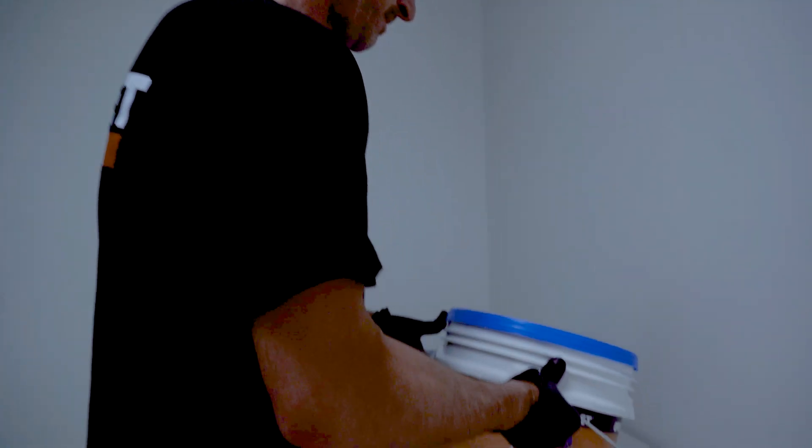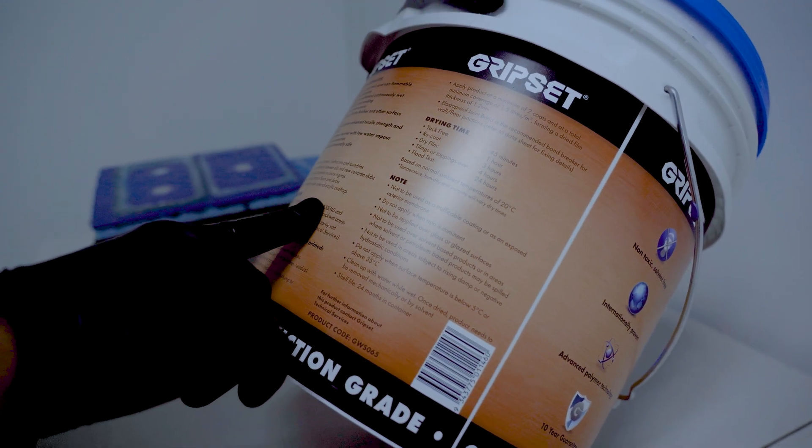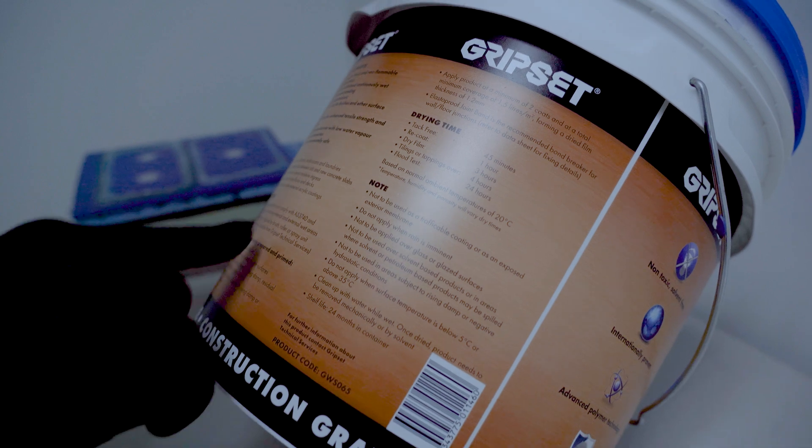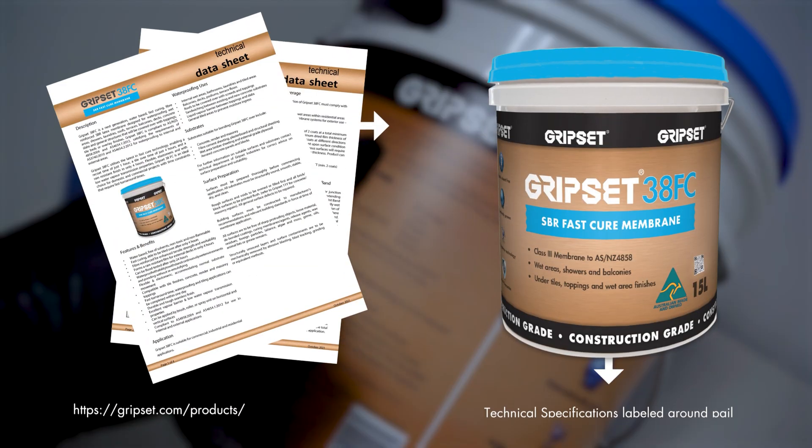So number one is not reading the instructions properly and this goes out to anyone that's ever tried to put an IKEA flat pack together and then getting stuck halfway because they haven't read the instructions. The instructions on the bucket are there for a reason.